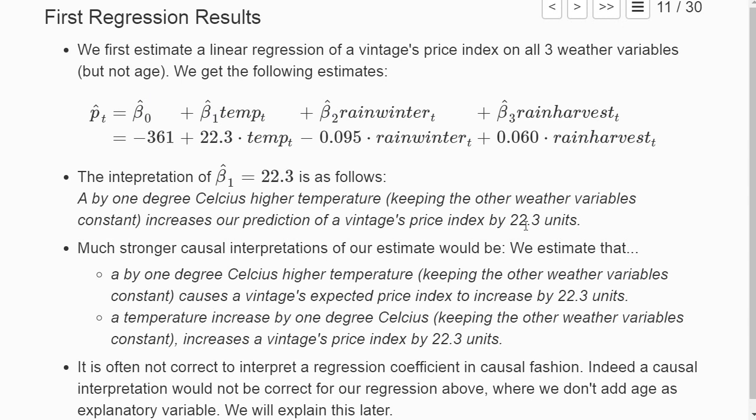In a lot of economic examples here it is actually not so important, but in a lot of others we really would like to estimate causal effects. So we would like to make a statement that a temperature increase by one degree Celsius is estimated to increase a vintage price index by 22.3 units. This implies that the temperature degree causes the increase in the price index. But unfortunately, if I just run a linear regression with some field data which does not come from a randomized experiment, such a causal interpretation often is wrong.